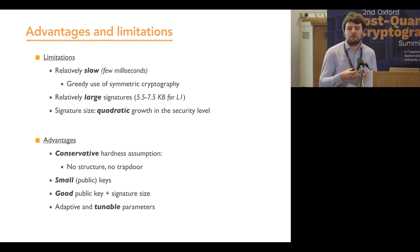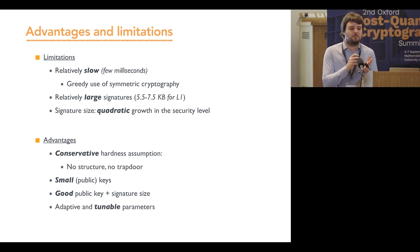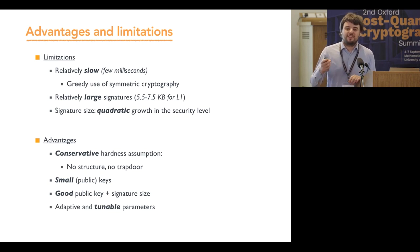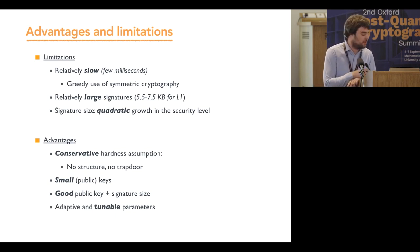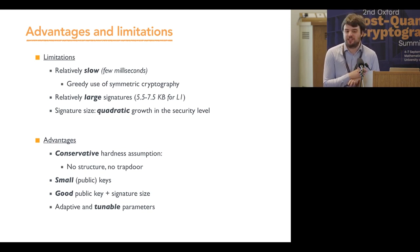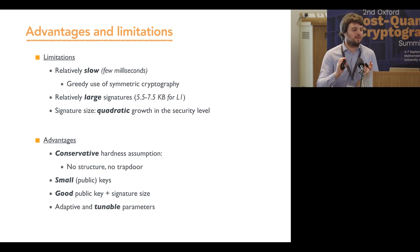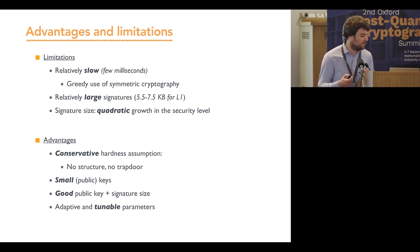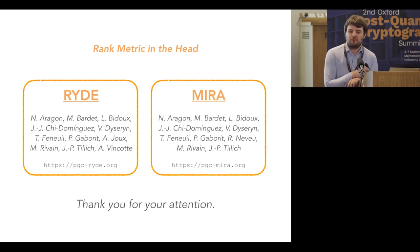Advantages: very conservative security, because we don't use trapdoors and we don't need structured problems in the MPC-in-the-Head paradigm. We work with the plain MinRank and plain rank syndrome decoding problems with no structure. All previous rank-metric signature schemes that were broken relied on structure — here there is none. The last known attack on this kind of problem was 20 years ago, making these schemes very conservative even within rank metric. Additionally, since the public key matrices are totally random, they can be represented as a seed, leading to a very short public key. This gives a good trade-off for the sum of public key and signature size. Finally, there are many tunable parameters, so we can find the best parameter sets for any given context. Thank you for your attention.